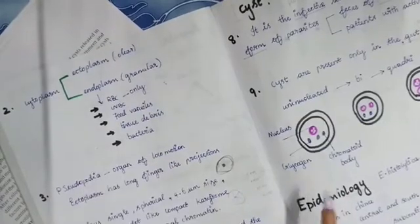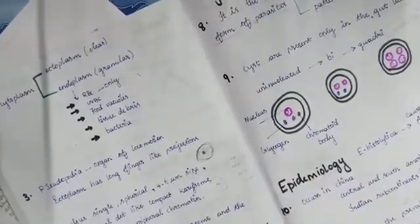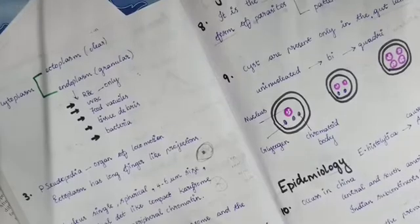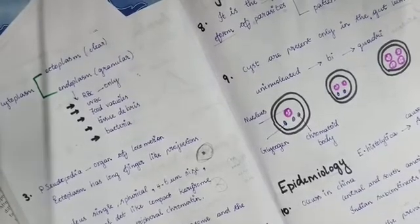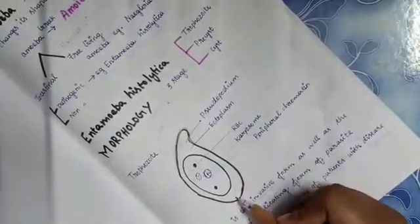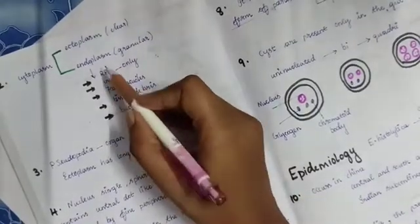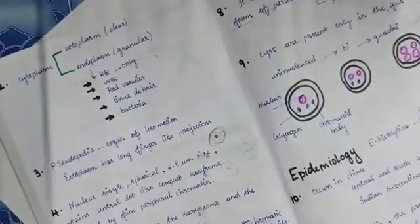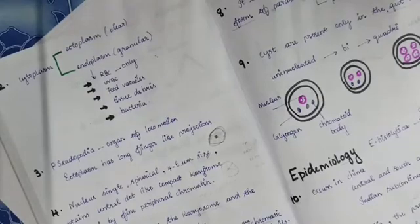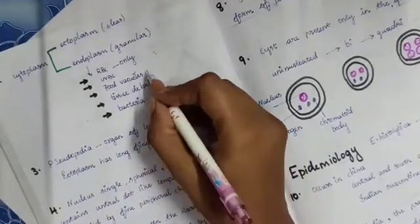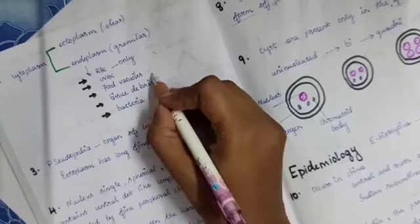And the second component of trophozoid is cytoplasm. Cytoplasm has two components: the ectoplasm and endoplasm. Ectoplasm looks clear, like this way. It is clear. And the endoplasm has granules, so it's named as granular endoplasm. In endoplasm, it has RBC, WBC, food vacuoles, tissue debris, and bacteria.